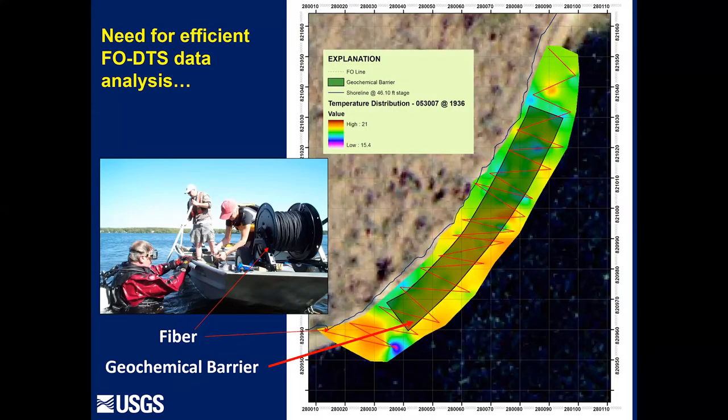Another example here is where we've got a cable just zigzagged all over the place — you can see that red line. This is a permeable reactive barrier that's intercepting phosphorus discharge to a lake on Cape Cod, Massachusetts, and we've interpolated data between where the cable is laid. If we know where those turn points are and pull that cable straight, we can interpolate that data over space, but we need to know where those points are. We'd like to do that rather quickly, potentially in the field, to help guide sampling in quasi real time.